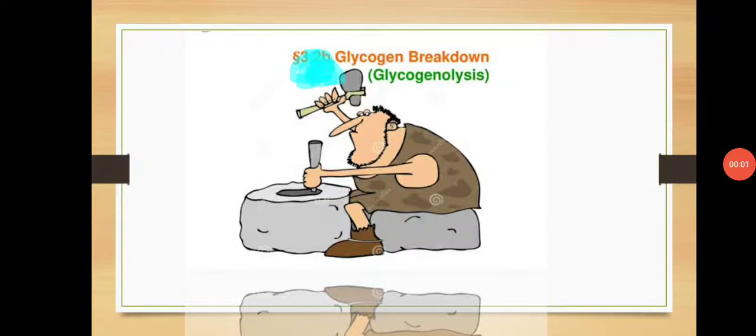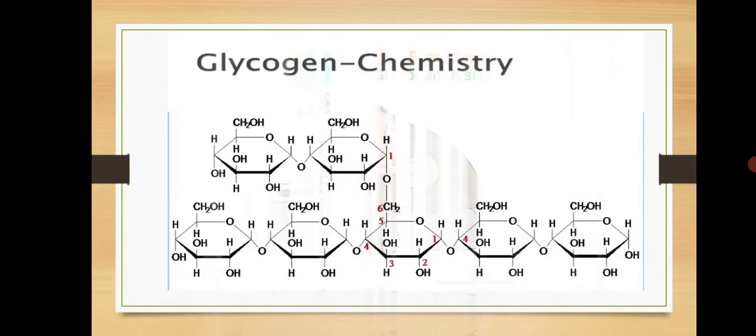Welcome dear students. In this lecture we are going to see the breakdown of glycogen. The breakdown of glycogen is called glycogenolysis — lysis means breakdown or cleavage of glycogen, hence it is called glycogenolysis.